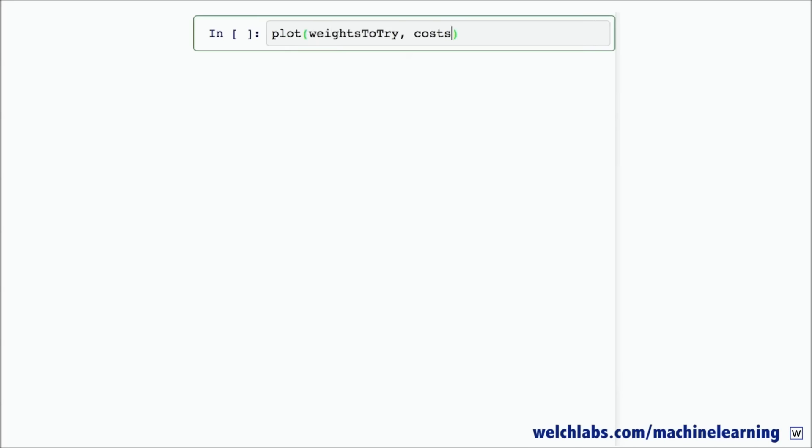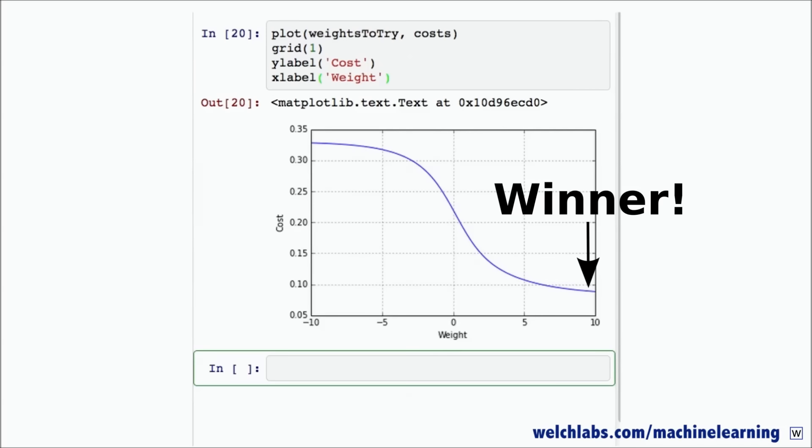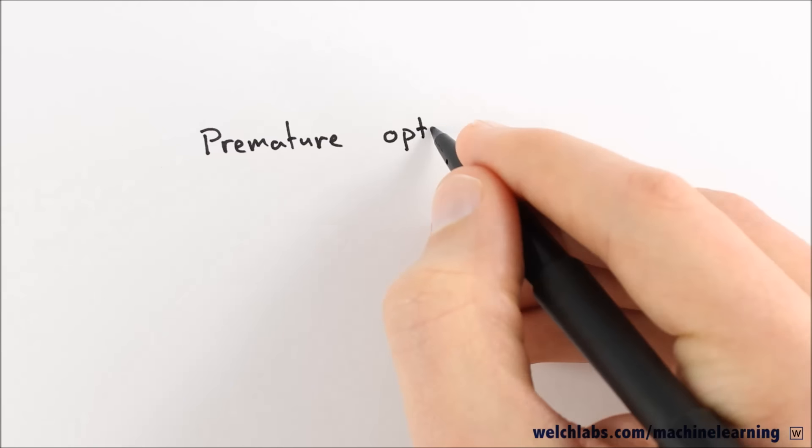Since we've computed the cost for a wide range of values of W, we can just pick the one with the smallest cost, let that be our weight, and now we've trained our network. So you may be thinking that 0.04 seconds to train a network is not so bad, and we haven't even optimized anything yet.